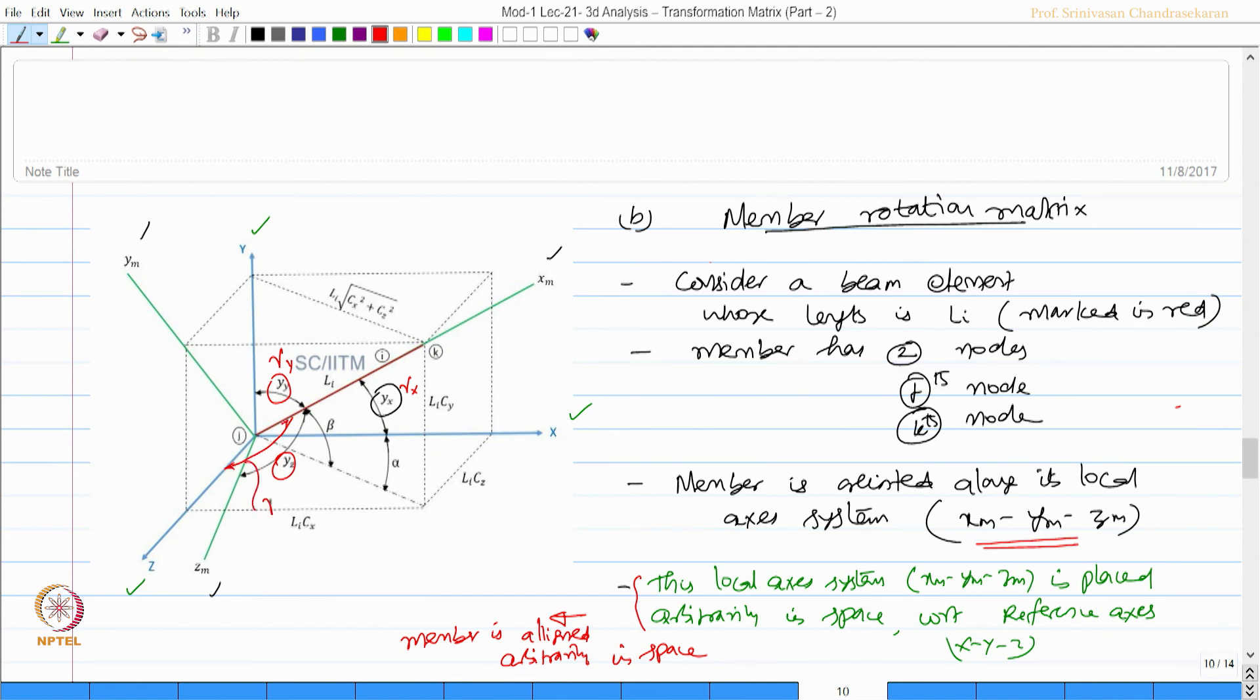So, gamma z - one can always find the projection of this which will be actually equal to Li cx. This distance, this value will be Li cx.